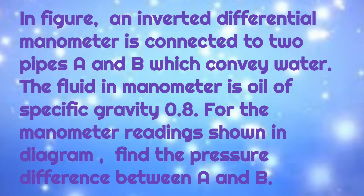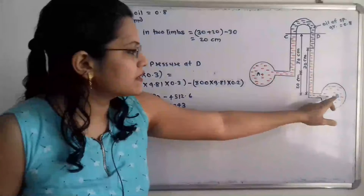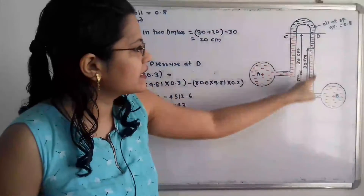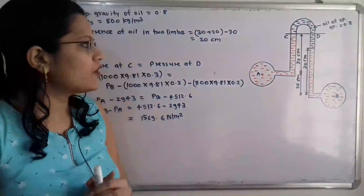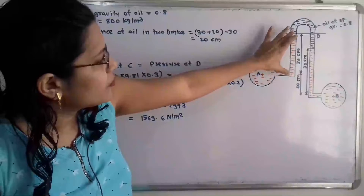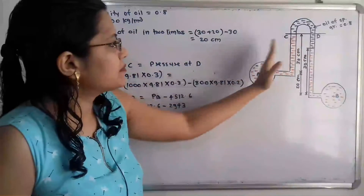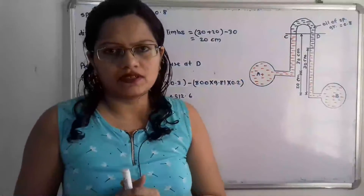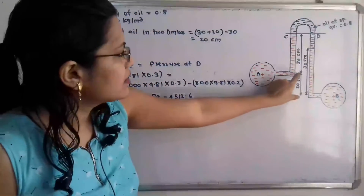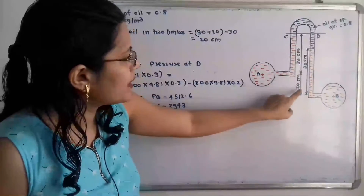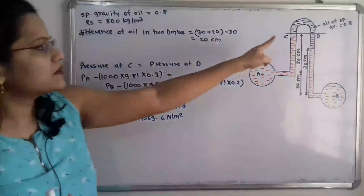This is the inverted U-tube differential manometer. It is called a differential manometer because the two pipes are at different levels. The U-tube is inverted and contains a light liquid — oil of specific gravity 0.8. The height of water in the left side limb is 30 cm, and in the right hand side limb the height of water is also 30 cm. The difference between the centers of the two pipes is equal to 20 cm.